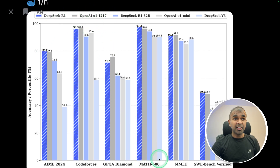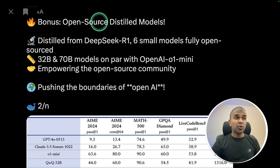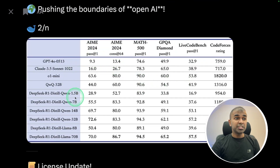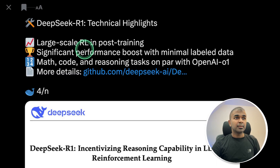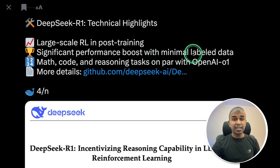Even in MATH 500 and SWE Bench Verified, DeepSeek R1 is better than the O1 model. It also includes open source distilled models — smaller models which can perform well and are available for free to use. These are reasoning models fine-tuned specifically so we can run them locally on our computer. It uses only reinforcement learning in post-training, achieving significant performance boosts with minimal labeled data on math, code, and reasoning tasks on par with OpenAI O1.